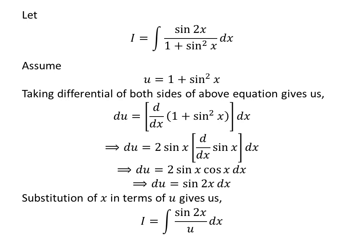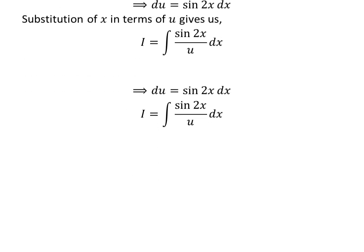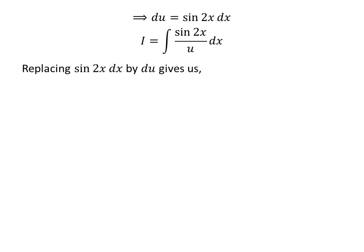We have assumed u is equal to 1 plus sin²(x). So, substitution of 1 plus sin²(x) by u gives us: i is equal to the integral of sin(2x) upon u. We have found that sin(2x) times differential of x is equal to differential of u. So, i is equal to the integral of 1 upon u with respect to u.